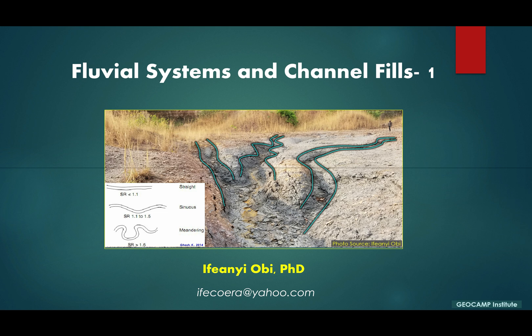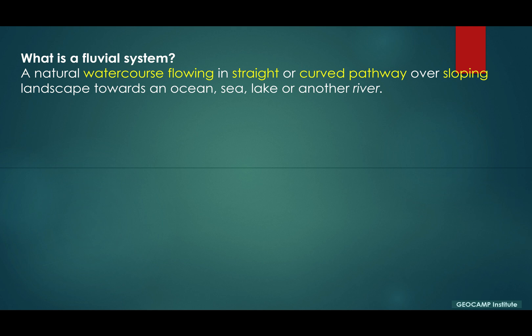Fluvial systems and channel fields. A fluvial system is a natural water course flowing in straight or curved pathway over sloping landscape towards an ocean, sea, lake, or another river.